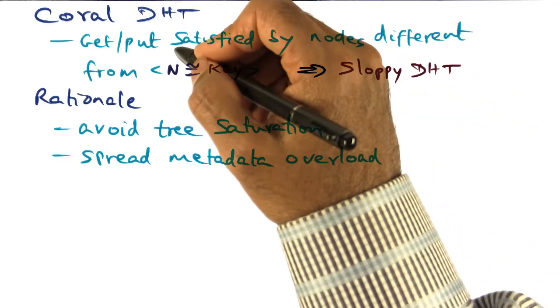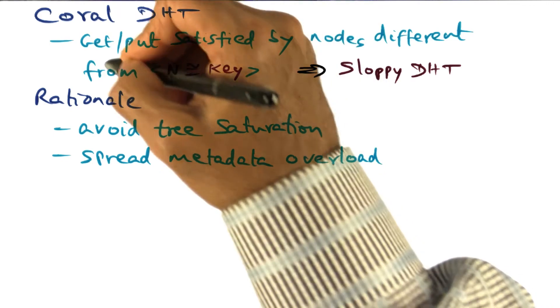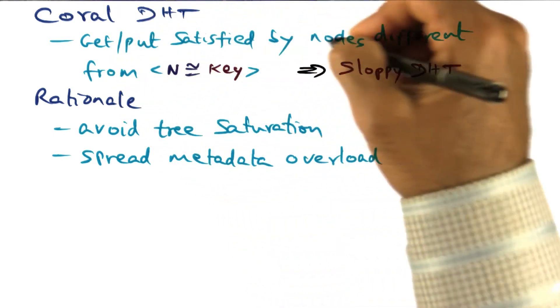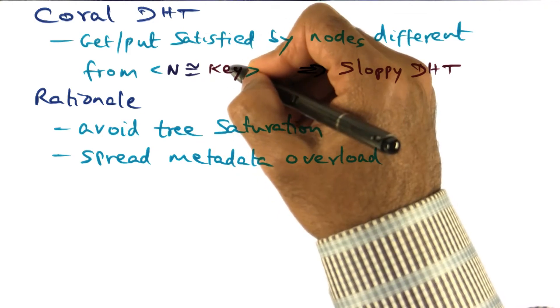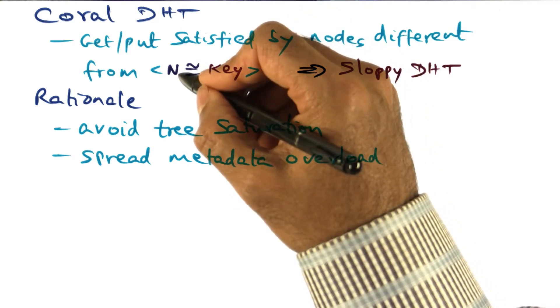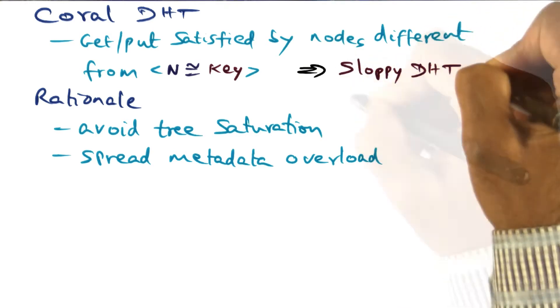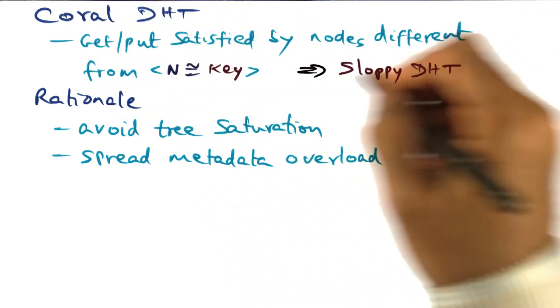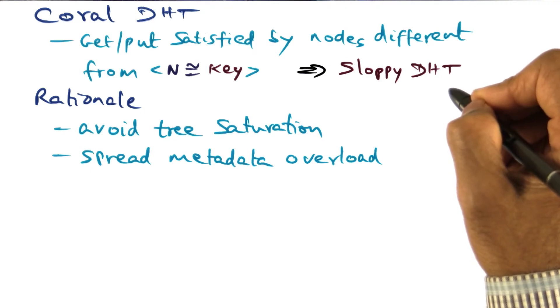So the top level bit I want you to take away is that in the chordal DHT, the get and put operations are satisfied by nodes that are different from the key k. The node ID n may not be close to key, and that's why the DHT that chordal implements is called a sloppy DHT. And we'll talk about details of that in a minute.